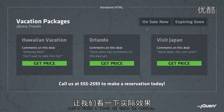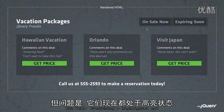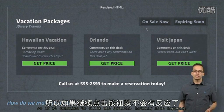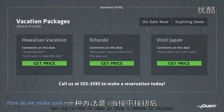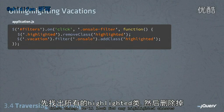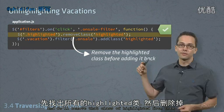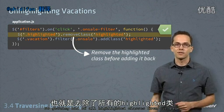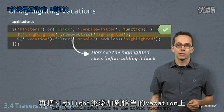Let's take a look at this in action. We click and we can see them highlighting, but everything's highlighted now. If we continue to click the buttons nothing more happens, so we need a way to unhighlight all of these vacations. One way we can do this is: when a button is clicked, first we'll look for any highlighted classes and remove that highlighted class from them — getting rid of all highlighted classes from our page before we then go and add highlighted back to the proper vacations.